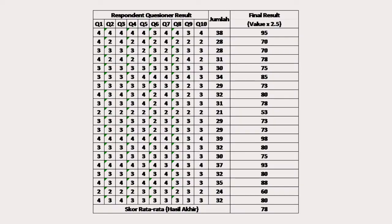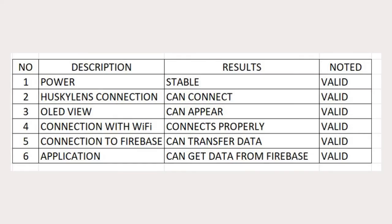The SUS (System Usability Scale) test aimed to assess the user experience of the HuskyLens-based disease detection system with Arduino and the Android application. The main focus of this test was to evaluate ease of use, comfort, and user satisfaction with the system. From Table 1, the SUS score is 78, indicating that the reliability of using HuskyLens to detect stroke disease meets good criteria.